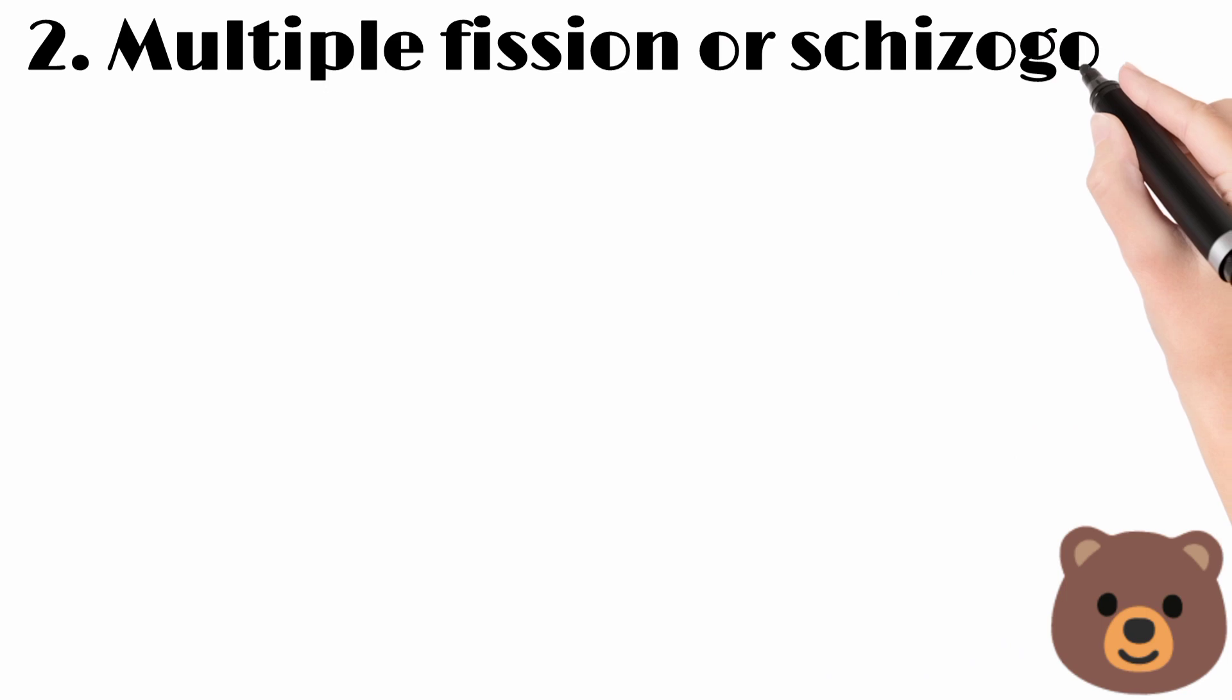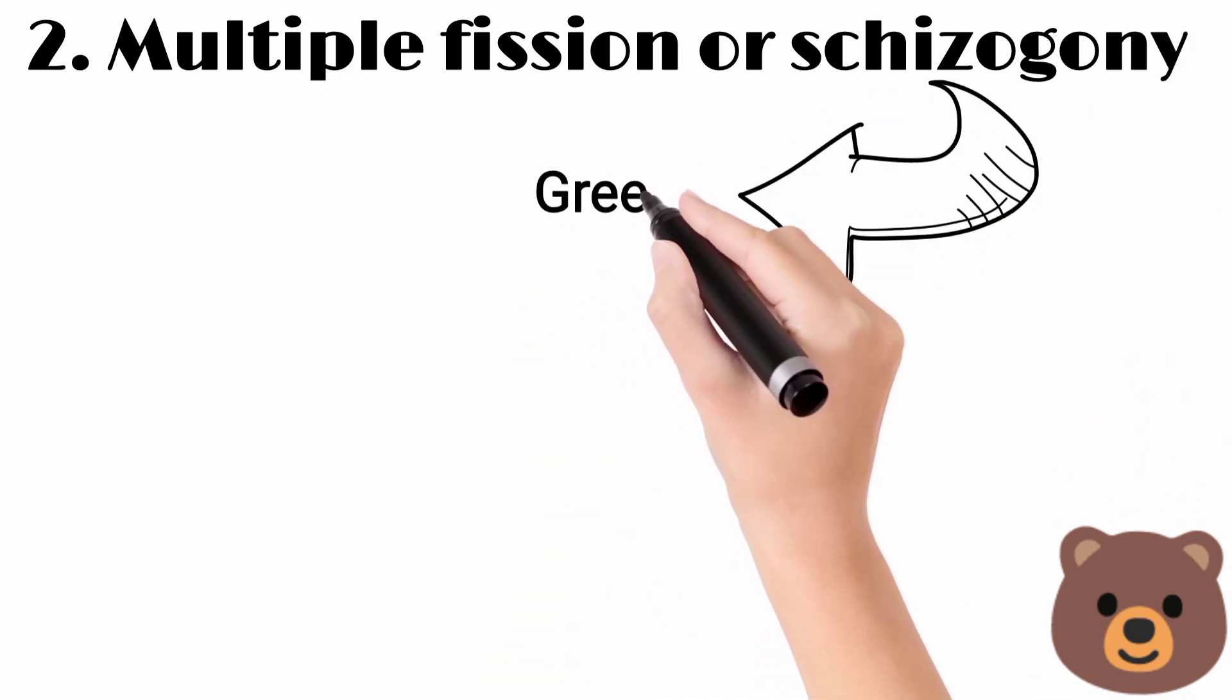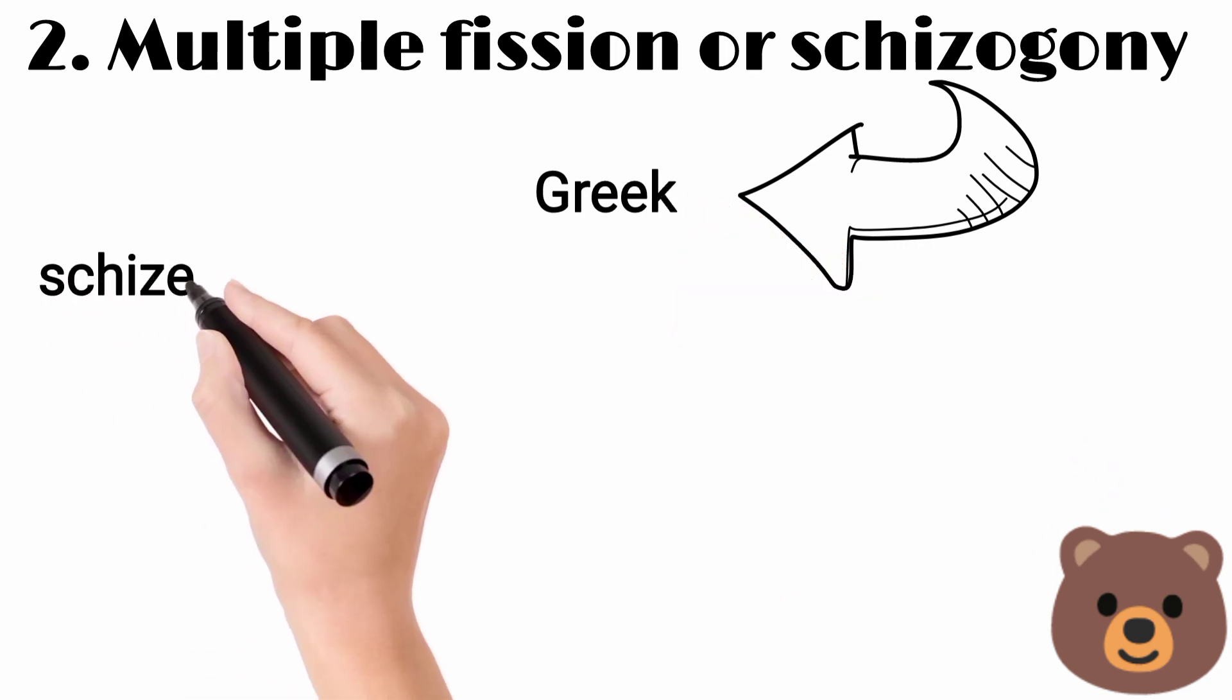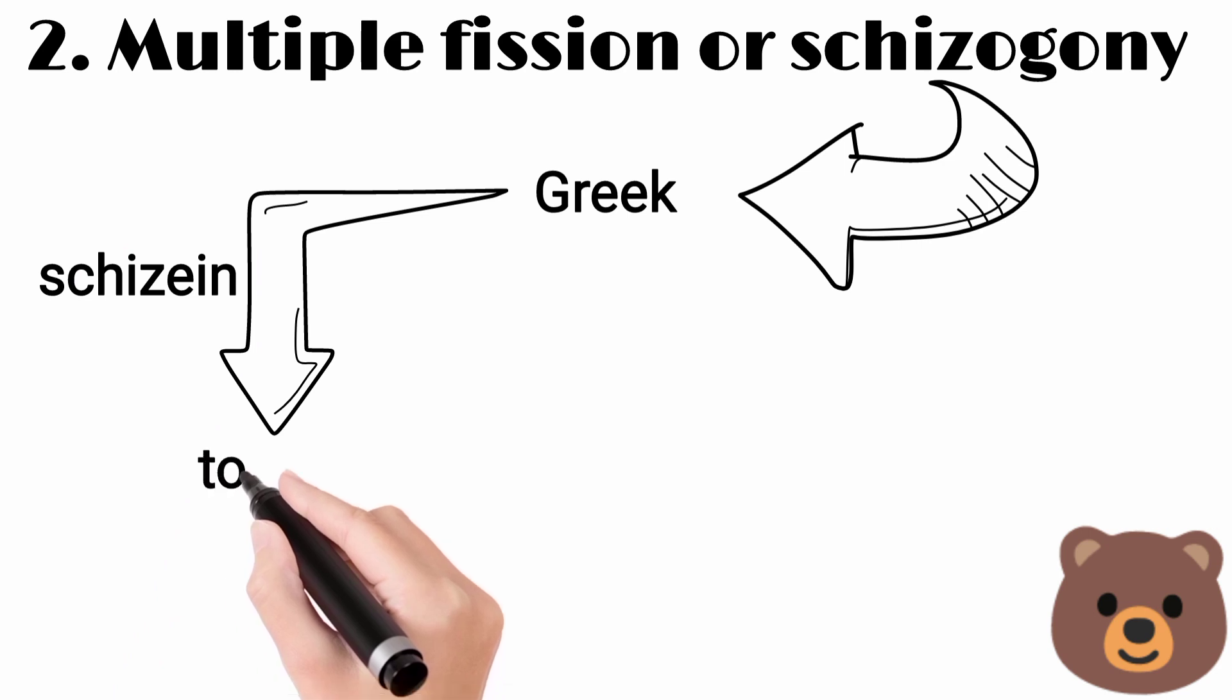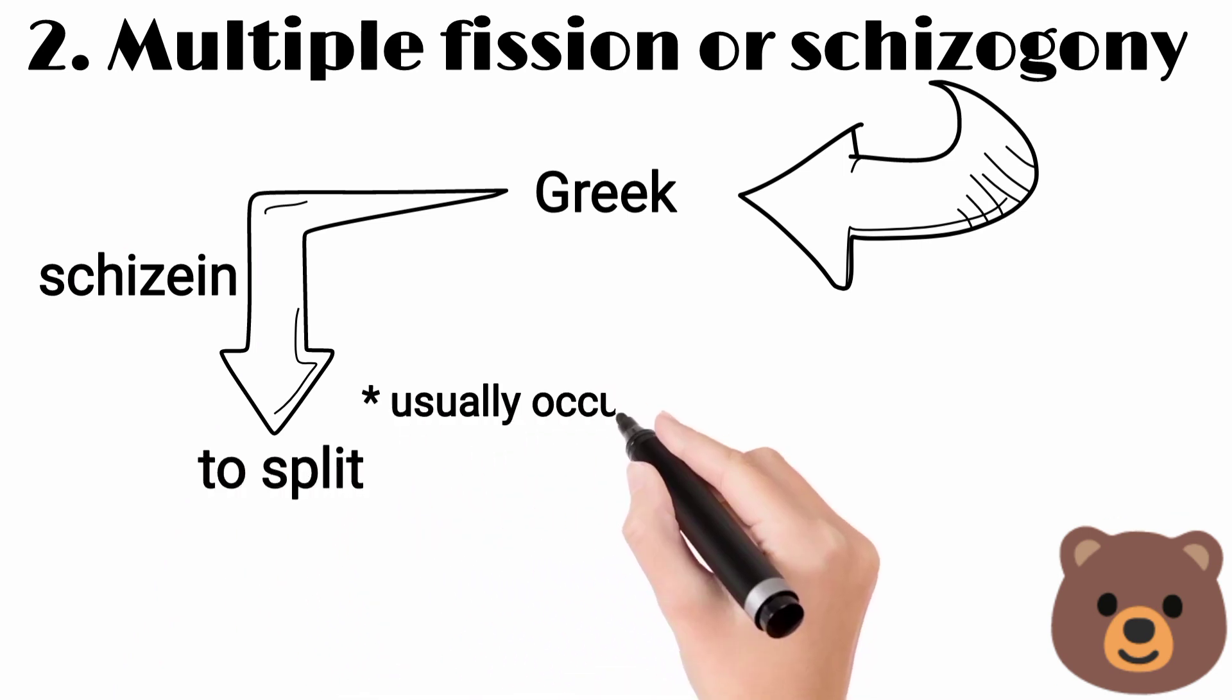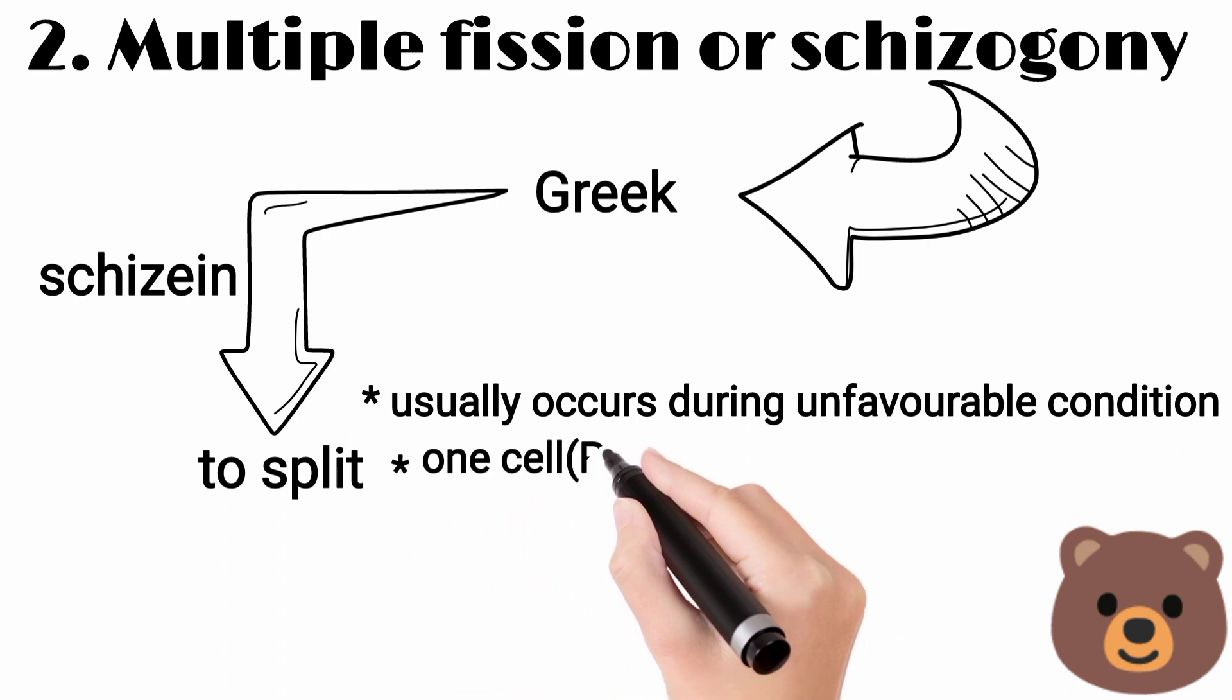Number two is multiple fission or schizogony. It is derived from the Greek word schizein, which means to split. Usually occurs during unfavorable conditions. One cell divides into many cells.